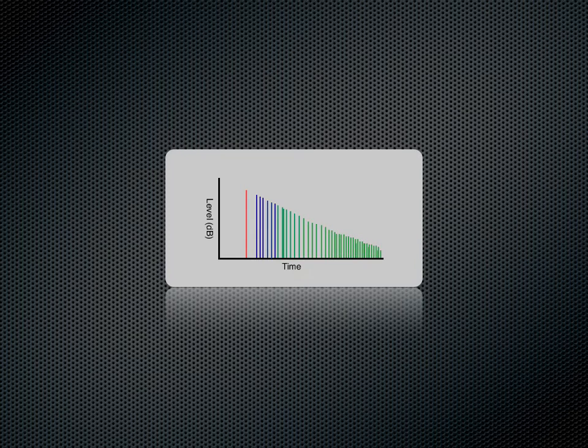The time it takes the sound to decrease 60 decibels SPL after its steady state sound level has stopped is reverberation time, or decay time. Now you know the anatomy of reverberation in an enclosed space.